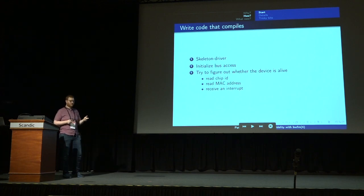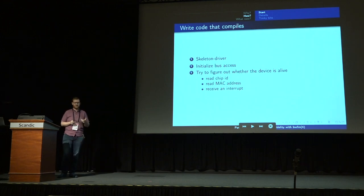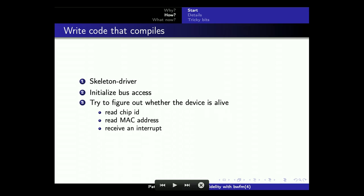When you write a driver, you start with a skeleton driver — something that simply attaches and says 'I've attached,' then you build on top. You figure out how to talk over the bus: if it's memory mapped, you bus-space map it; if it's USB, you find the pipes to send messages over. Once that's done, try to find out if the device is alive — read its chip ID, read its version, read a MAC address and see if it responds. If you got that going, you know you can talk to the device, and then you start building all the layers on top.